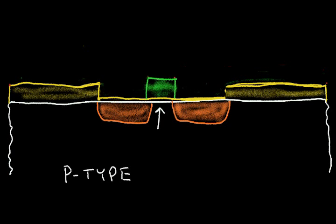So let's label things. This is an N-type region, this is an N-type region, and this is my gate. The voltage on this gate controls what happens in the channel region below the gate.